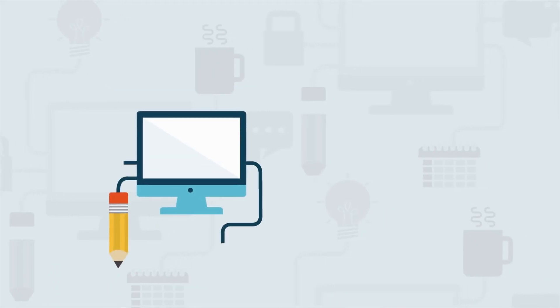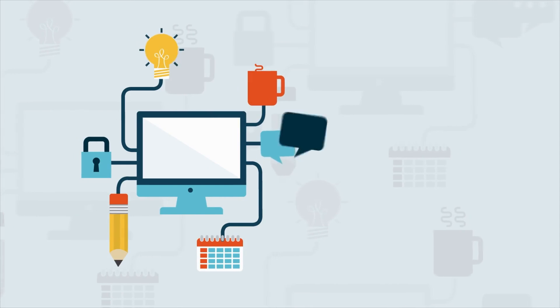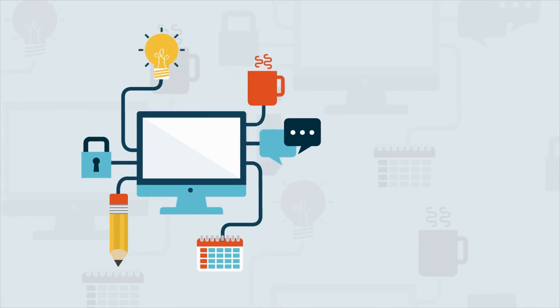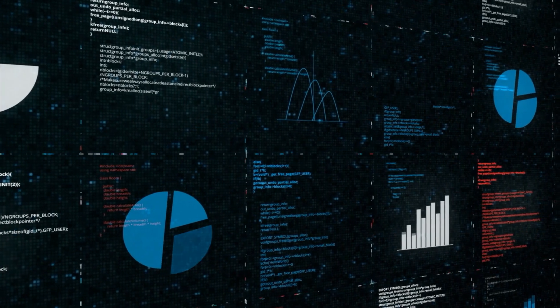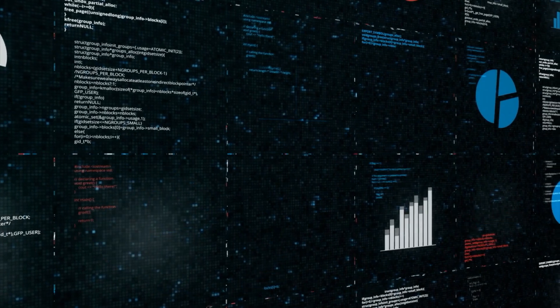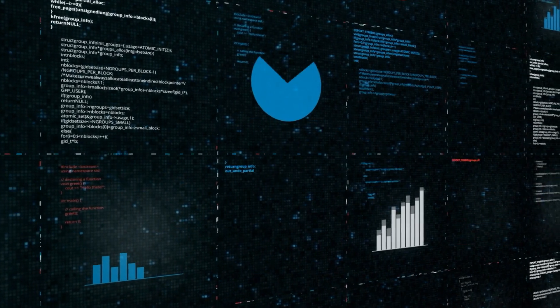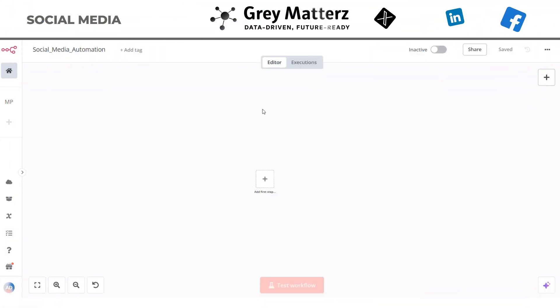In this tutorial we will build an automation workflow that takes an article link on any topic, summarizes the content, creates platform-specific posts, and publishes them across your favorite social media platforms. Let's get started. Step one in our workflow is the Execute Workflow node.